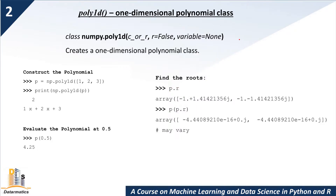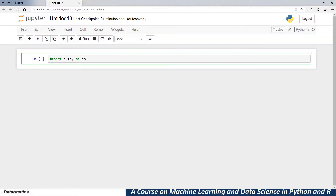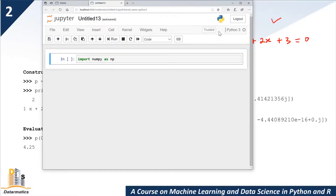So let's say we have x squared plus 2x plus 3 equal to 0. This is a valid polynomial. The first thing we want to do is to construct the polynomial. I'm going to open Jupyter Notebook — if you haven't, just open Jupyter Notebook and keep it open.